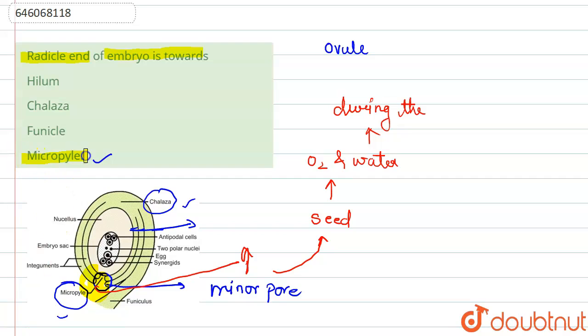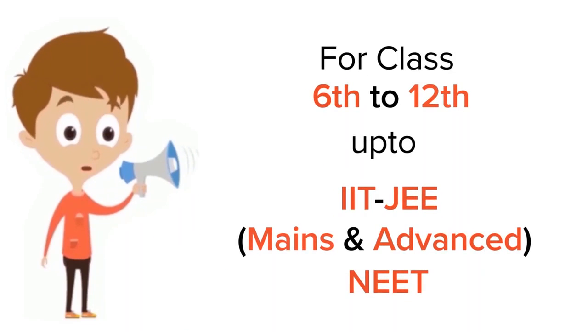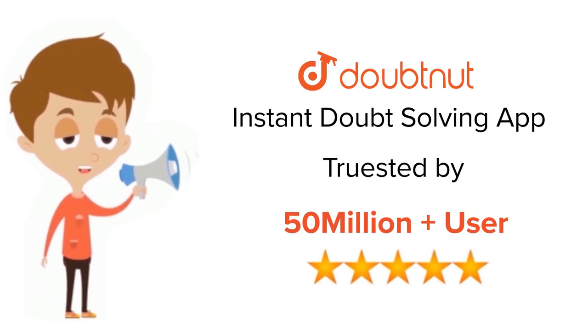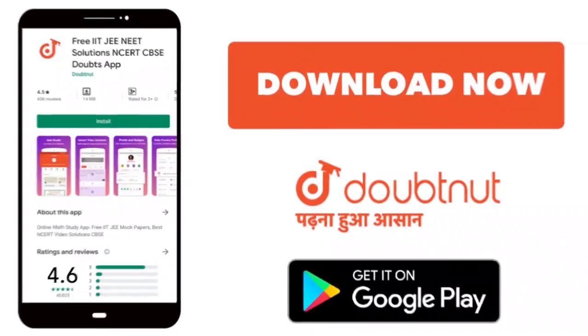So the correct answer to our question is option D. Thank you. For class 6-12, IIT-JEE and NEET level, trusted by more than 5 lakh students, download Doubtnet today.